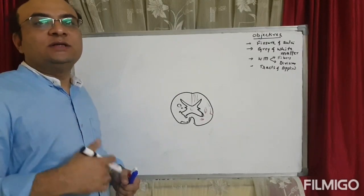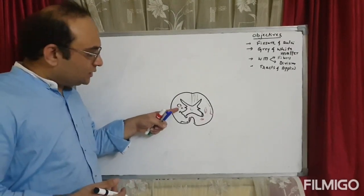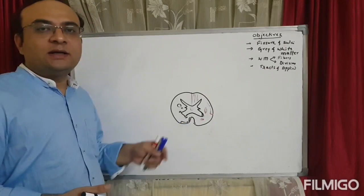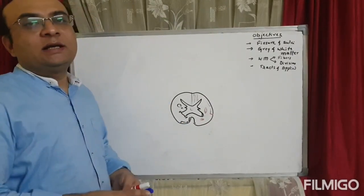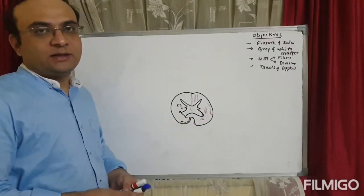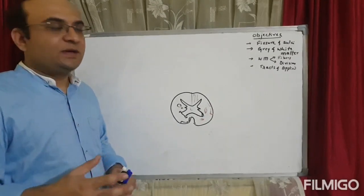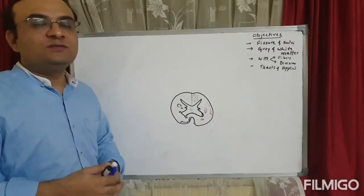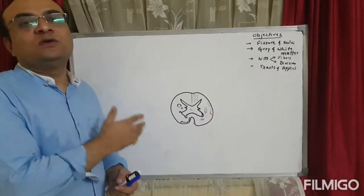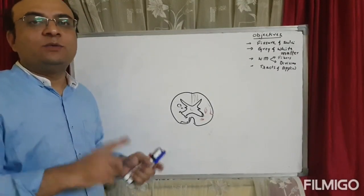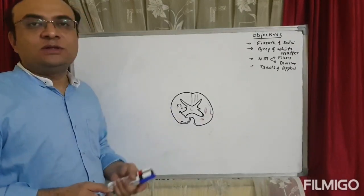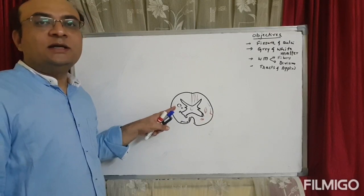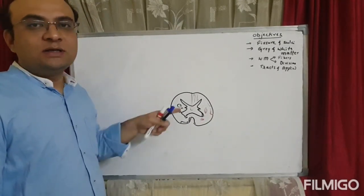The descending (motor/efferent) tracts include the lateral corticospinal tract, rubrospinal tract, anterior corticospinal tract, tectospinal tract, vestibulospinal tract, and medial and lateral reticulospinal tract. In the motor system, there are two neurons: upper motor neuron and lower motor neuron. The lateral corticospinal tract is in the lateral column, connecting the cerebral cortex to the spinal cord.